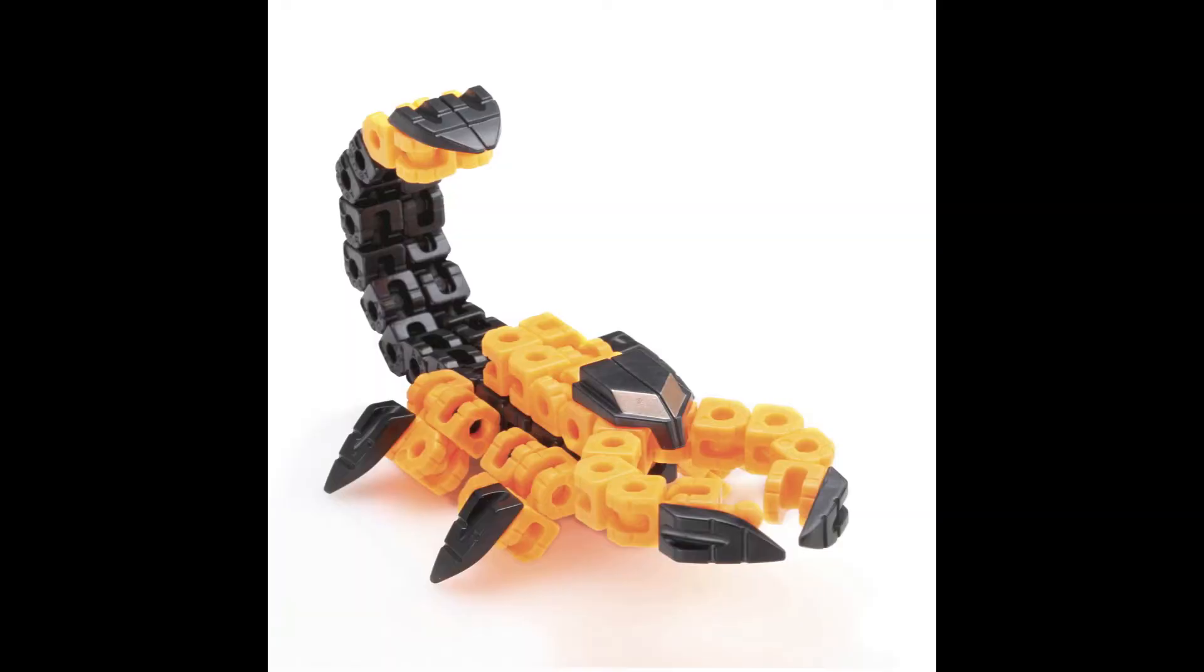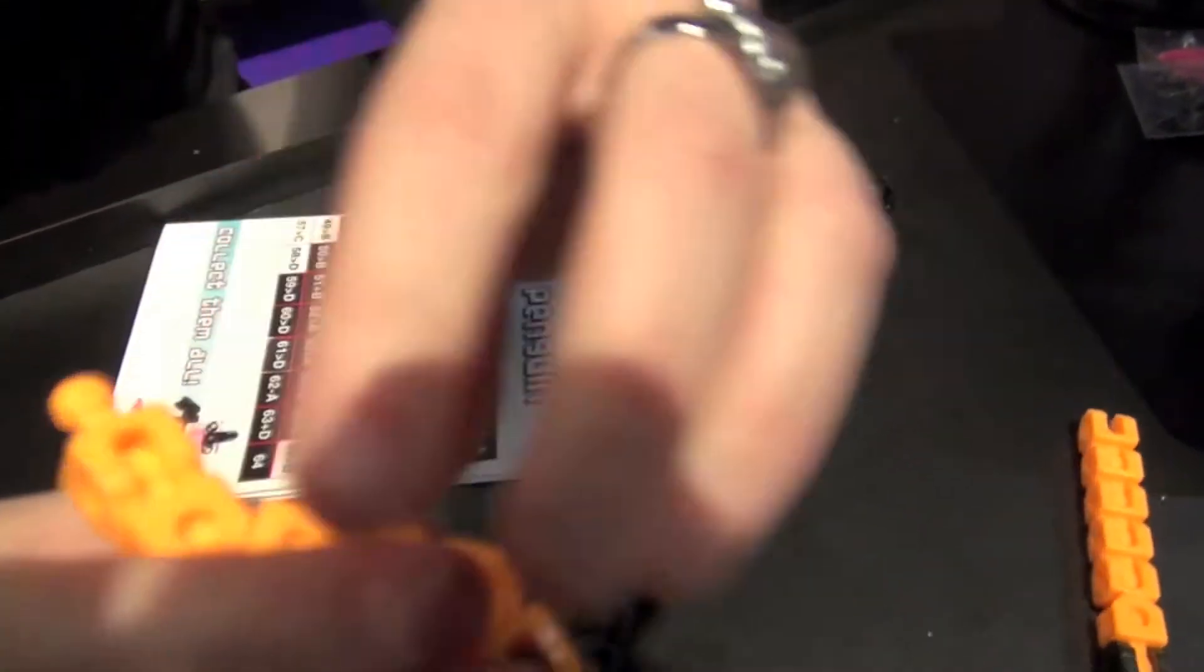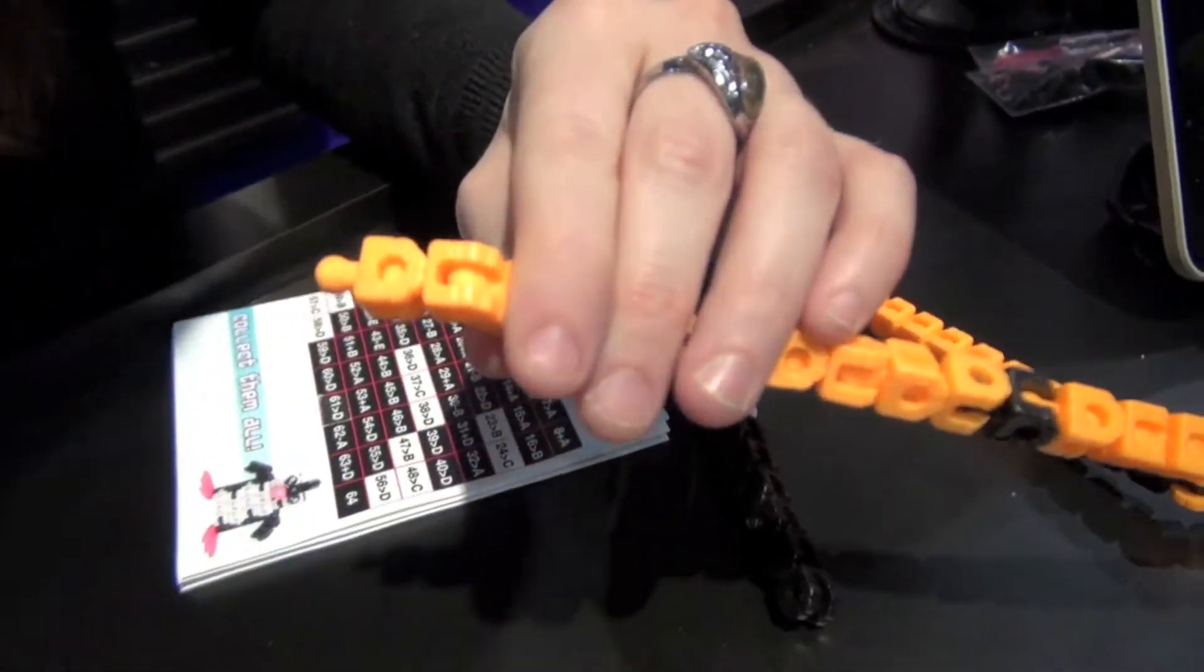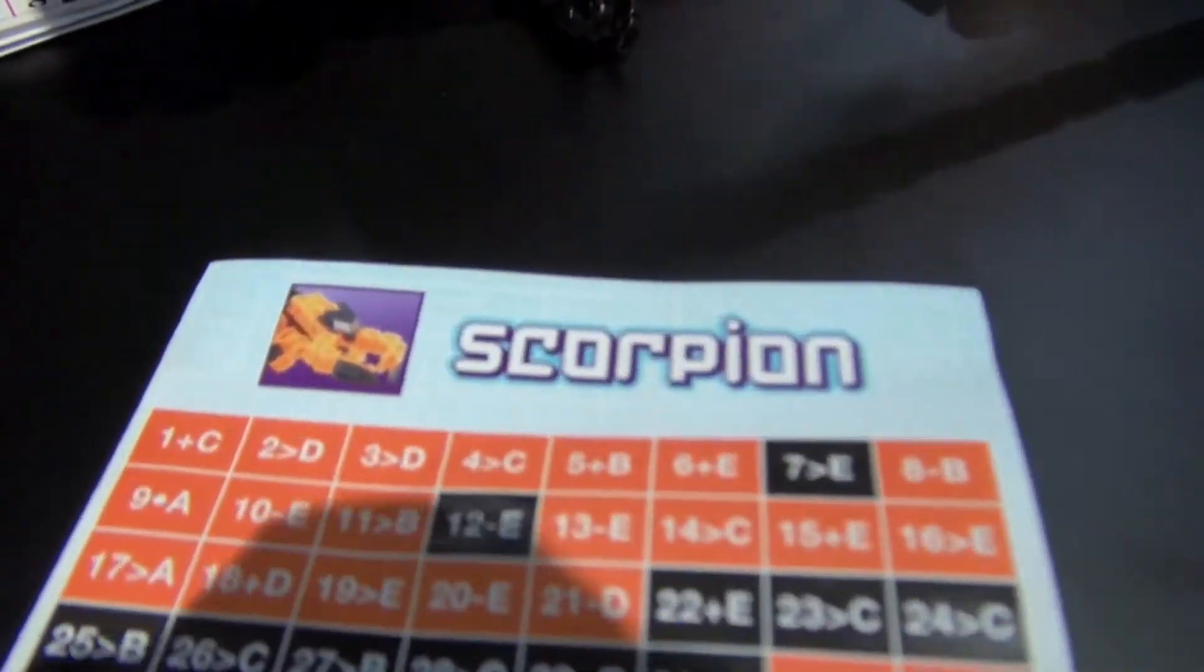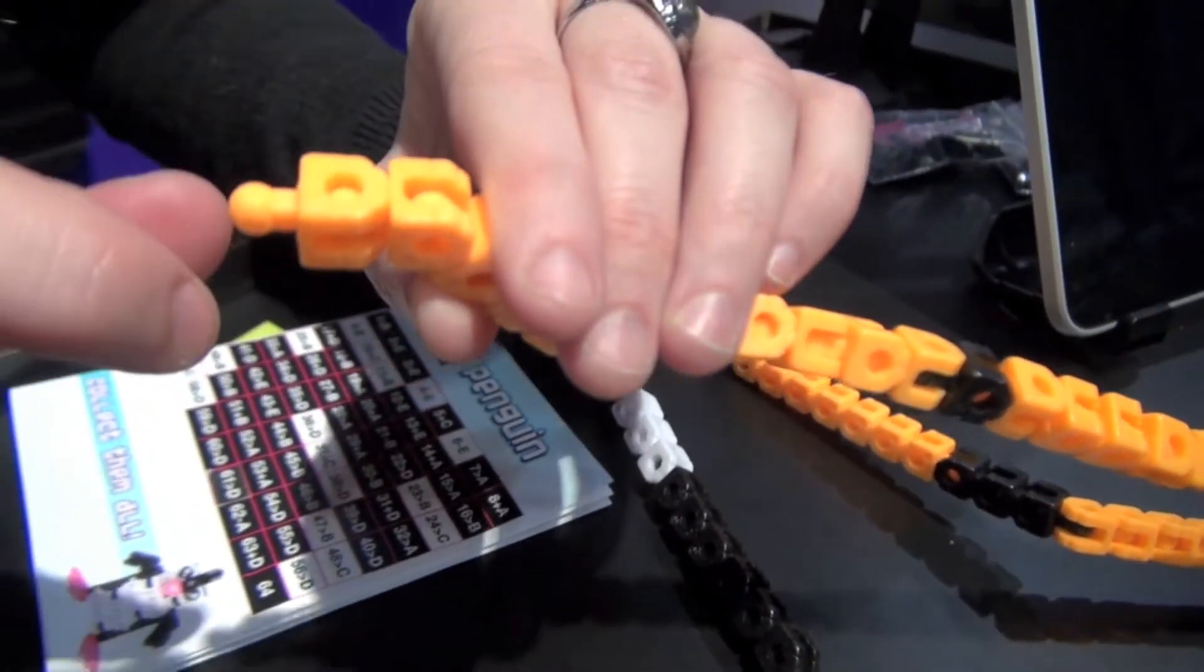All right, so over here we were making a scorpion. This is the first block. It's got the number on the bottom left right here. Can you see it? And the letters on the side. The first step is one plus C. So we have the one plus C, and now the C is sort of flushed up against the next block.